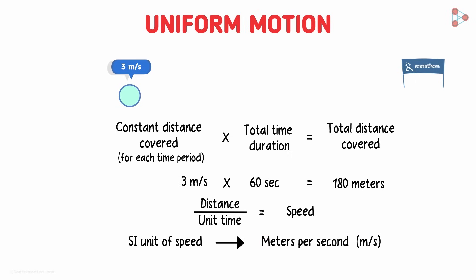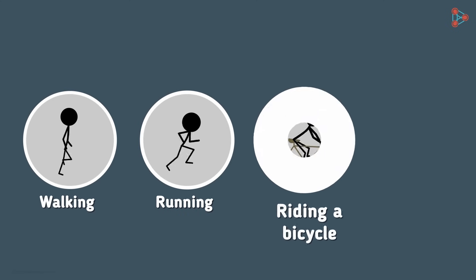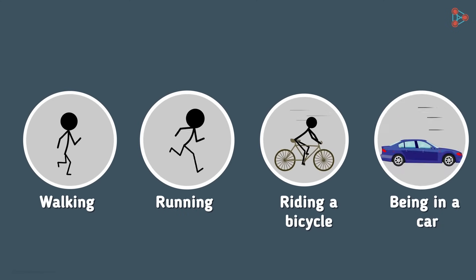We observe this gentleman here running at a constant speed of 3 meters per second. He is definitely a thorough professional, but in our day to day lives it is very rare to see uniform motion whether it is walking or running, riding a bicycle or being in a car. We walk briskly for a while and then get tired and our pace slows down.